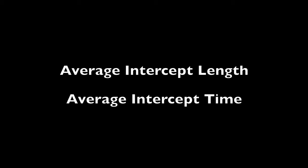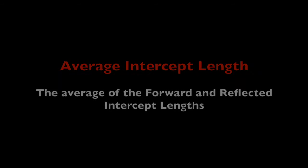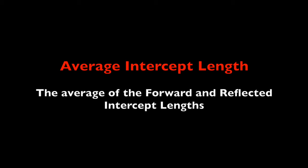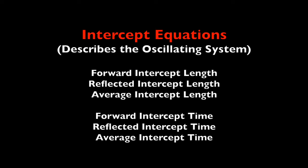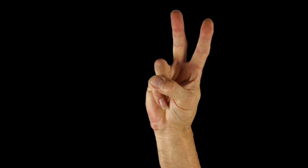Before I look at Einstein's work, there's one more pair of equations I need to introduce: the average intercept length and time. The average intercept length is simply the average of the forward and reflected intercept lengths, and the average intercept time is the average of the forward and reflected intercept times. All of the intercept equations describe times or lengths associated with an oscillating system.